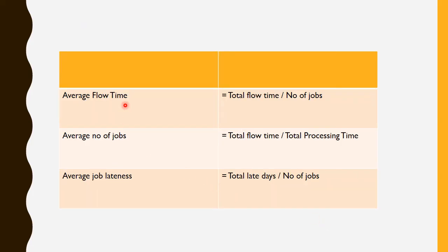We now apply three formulas to compare the rules: Average Flow Time = total flow time ÷ number of jobs; Average Number of Jobs in the System = total flow time ÷ total processing time; Average Job Lateness = total late days ÷ total number of jobs.